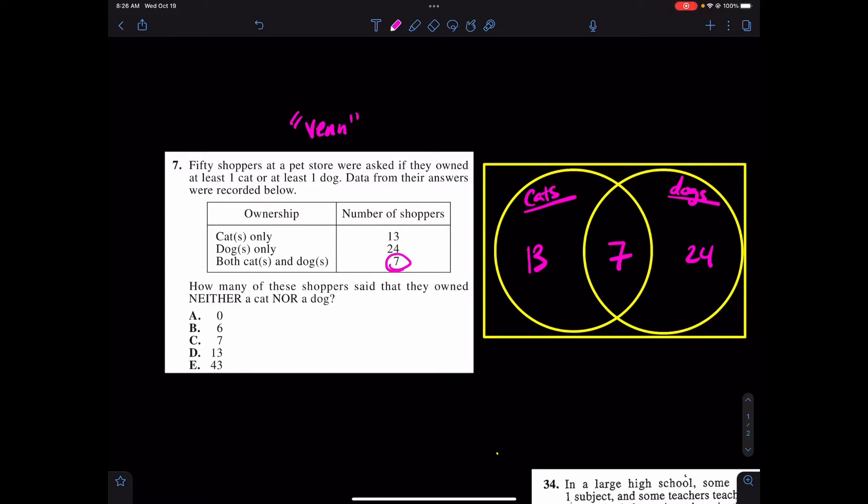It then says how many of these shoppers said that they owned neither a cat nor a dog? Well, yeah, I'm trying to fill in this gap over here. How many people don't own either of these? Well, it does say that in the question that 50 shoppers, again, 50 shoppers total were surveyed.